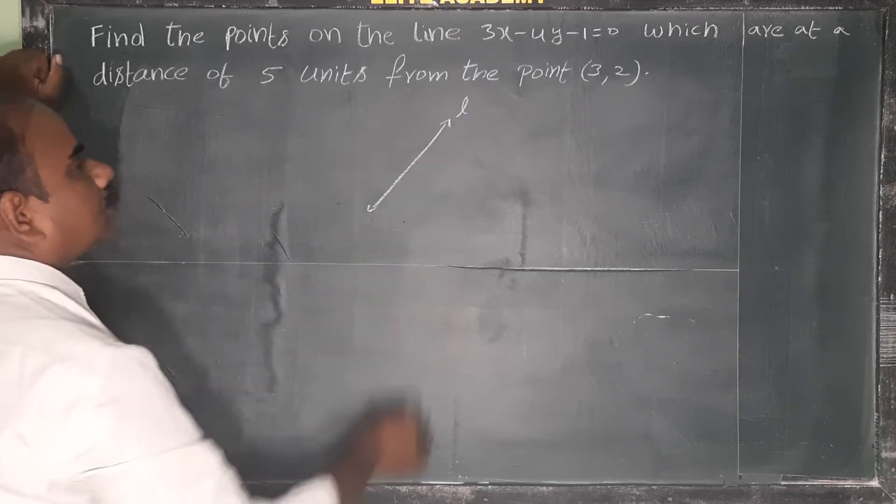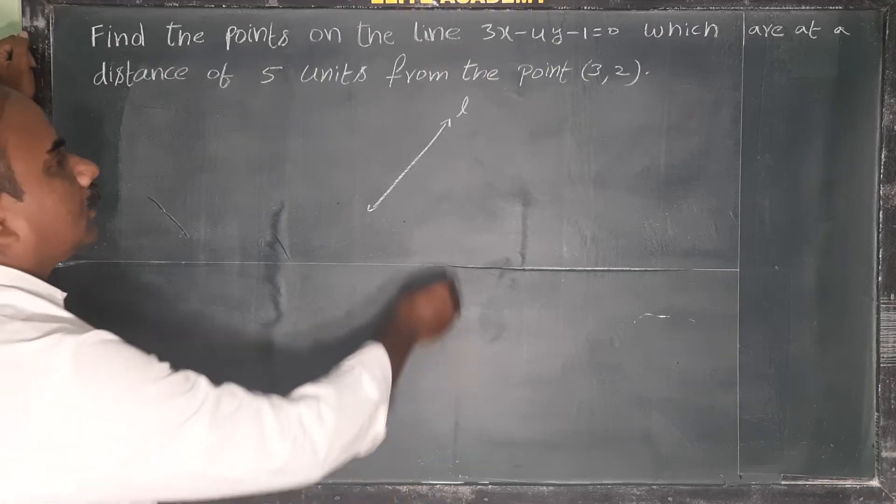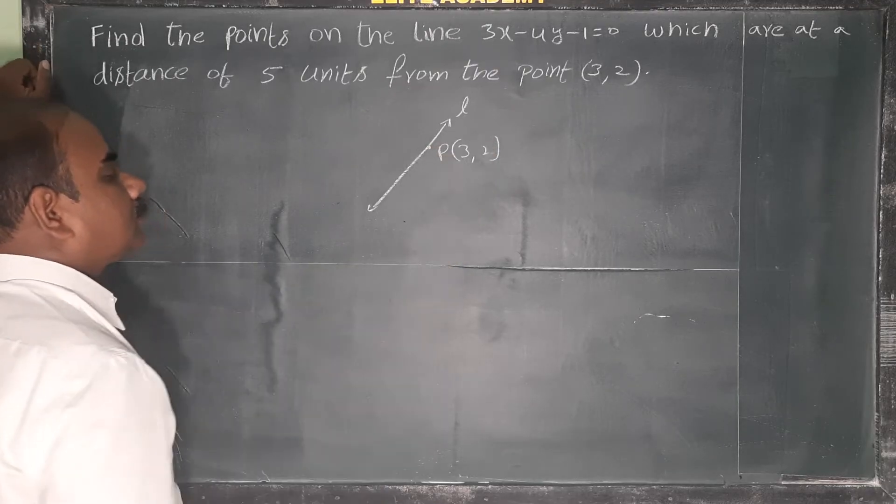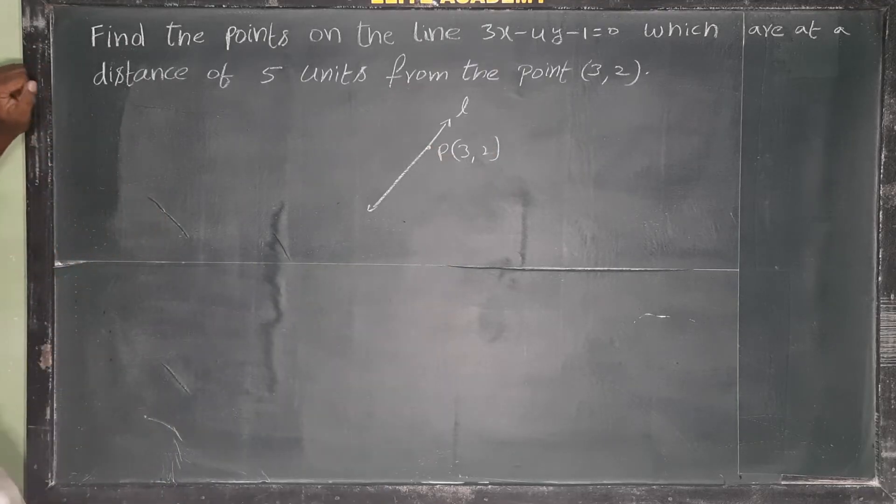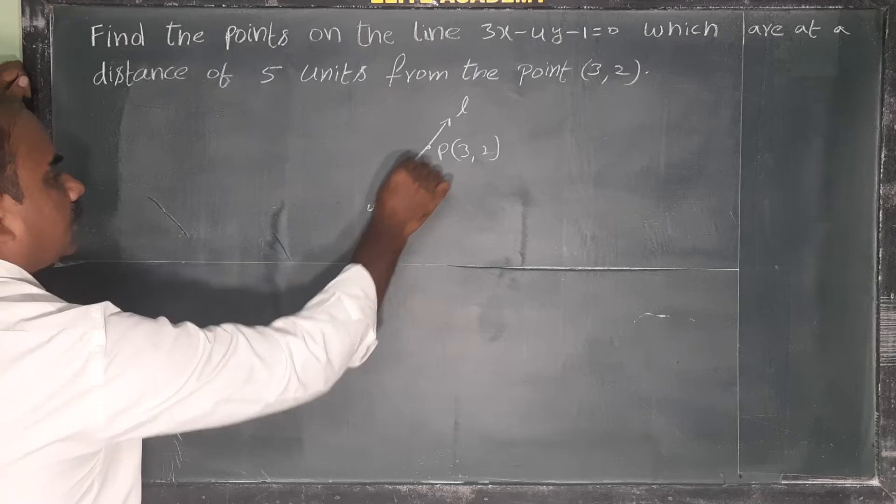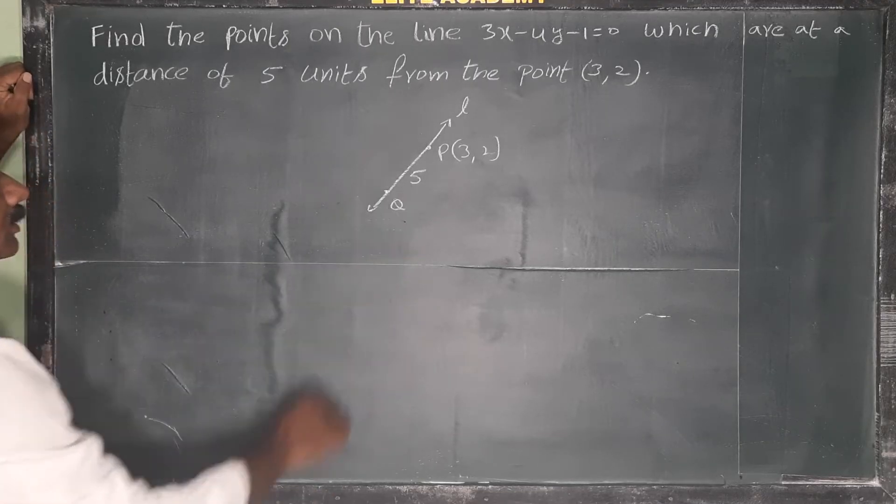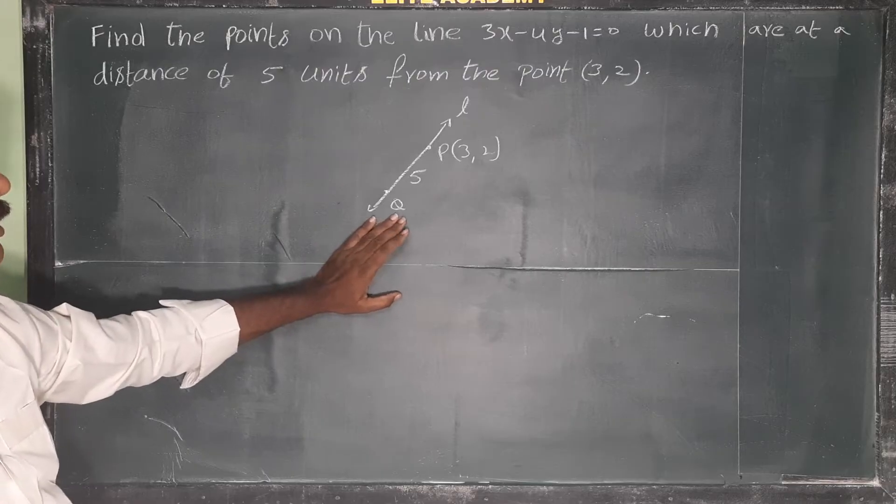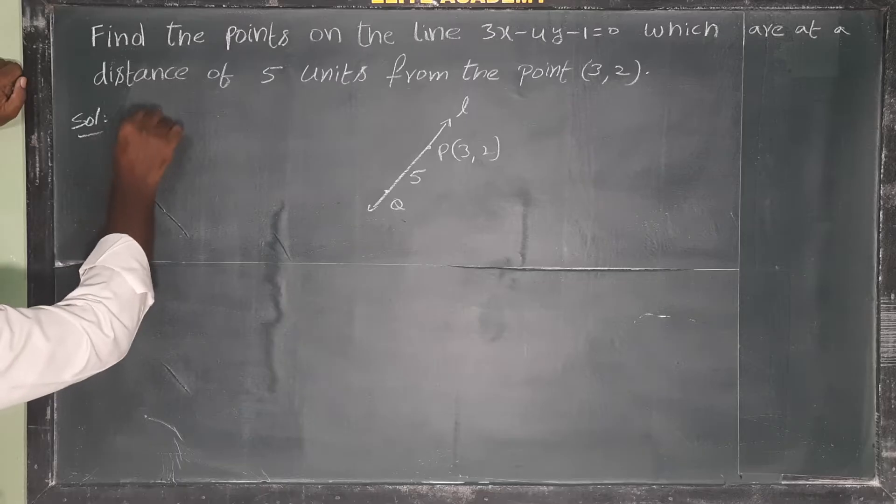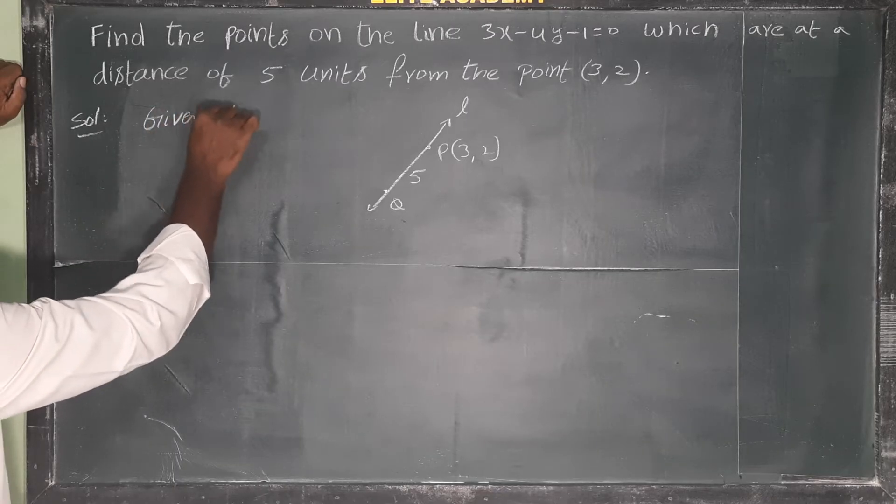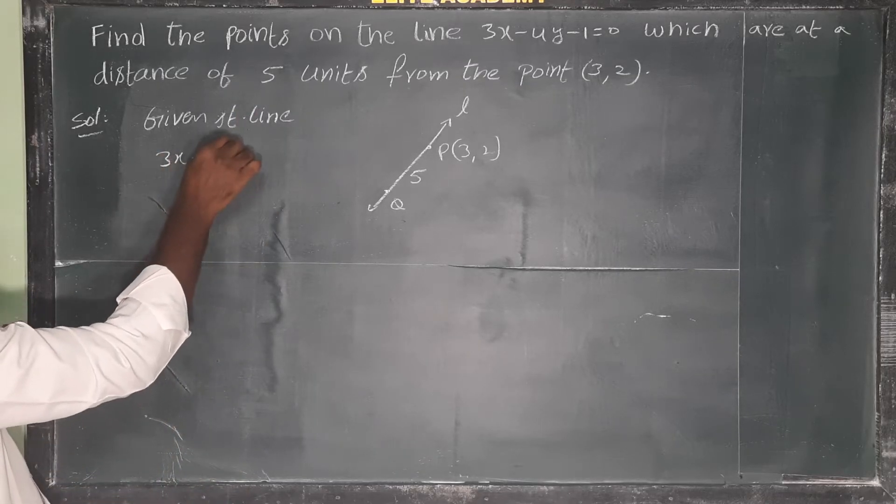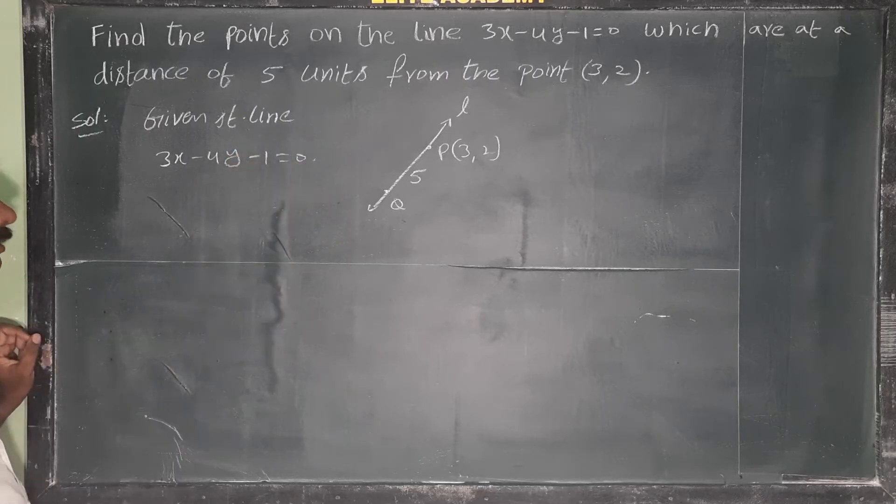This straight line has a point on it, and we need to find points that are 5 units distance from the point (3, 2). Let's say this is point P. There will be points on the line, let's say point Q, at a distance of 5. Solution: Given line, given straight line 3x minus 4y minus 1 equals 0.